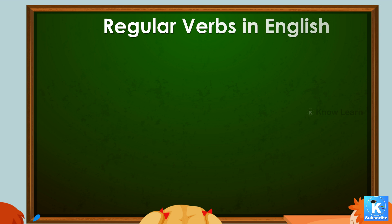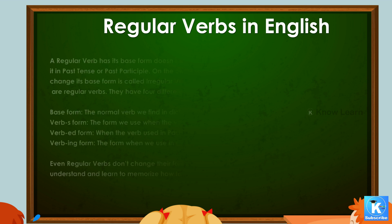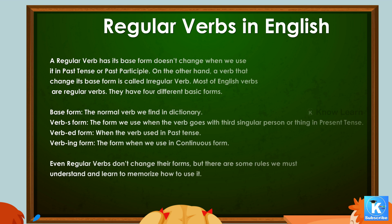Regular Verbs in English. A regular verb's base form doesn't change when we use it in past tense or past participle. On the other hand, a verb that changes its base form is called an irregular verb.